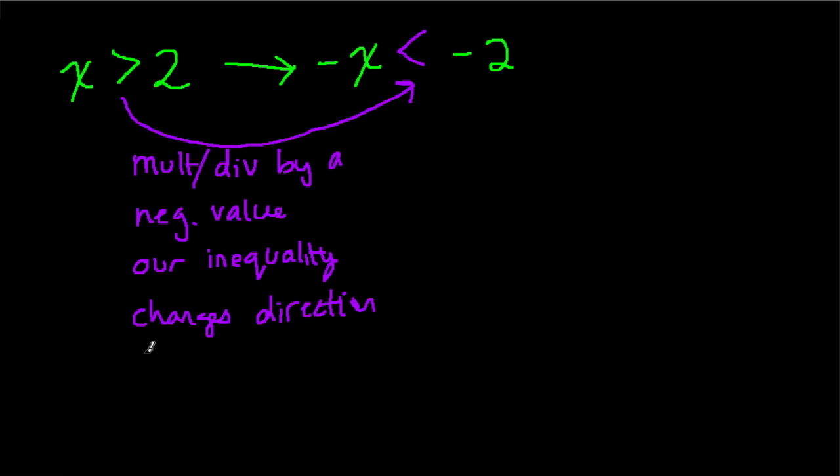So let's try a different example really quick. Let's say we had the number 4. 4 is bigger than 2. But let's multiply both sides by negative 1. So 4 times negative 1 is negative 4. What's 2 times negative 1? That's just negative 2. And what does this mean now?